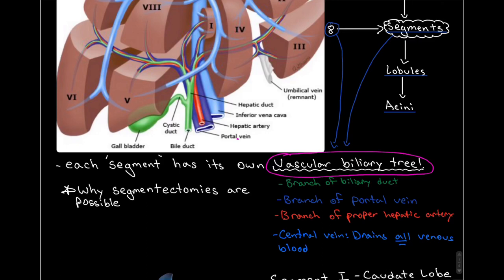Each one of these segments contains a branch of the biliary duct, a branch of the portal vein and a branch of the proper hepatic artery and these three make the vascular biliary tree.